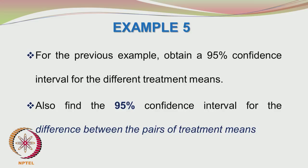You can tell the farmer that the data does not support the idea that fertilizers are having an effect. The farmer has tried a lot and invested effort in growing tomatoes from 5 different fields. Let us hope he makes sufficient profit. The next problem is to obtain a 95% confidence interval for the different treatment means, and also to find the 95% confidence interval for the difference between pairs of treatment means.